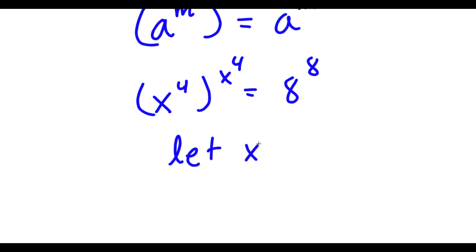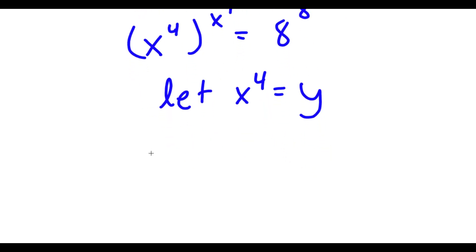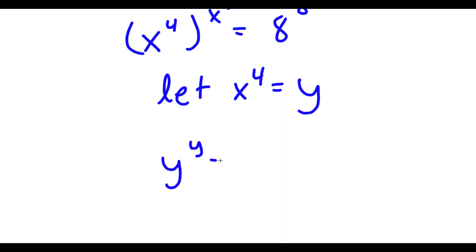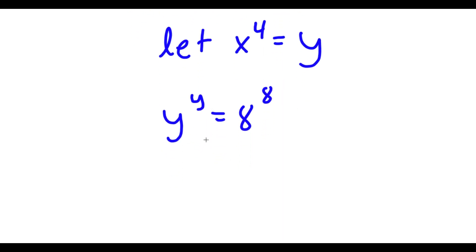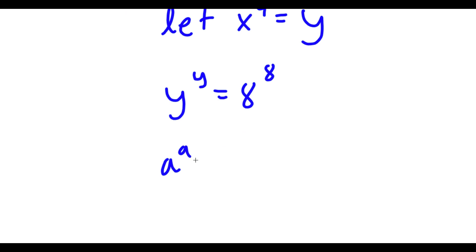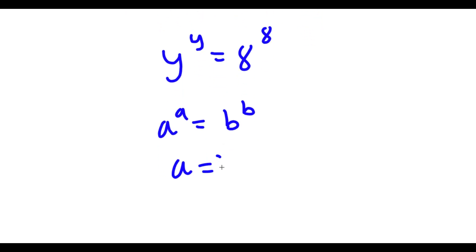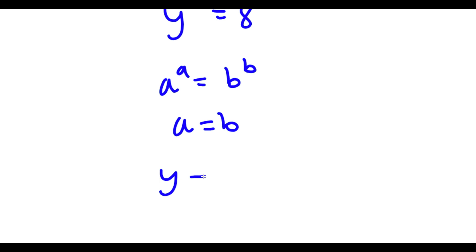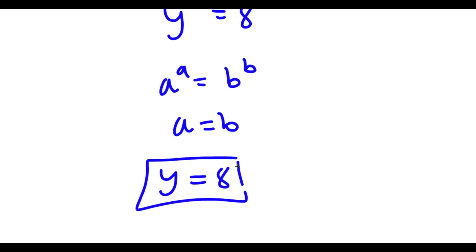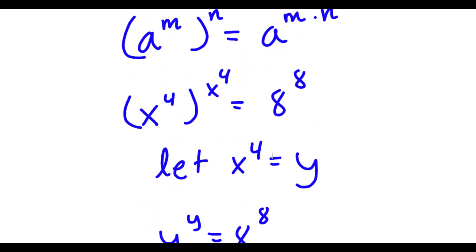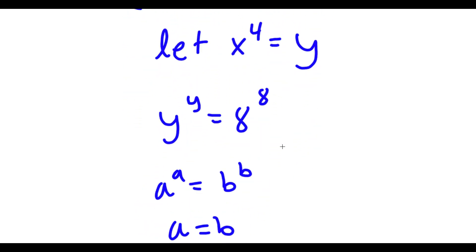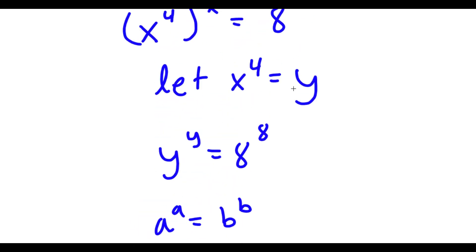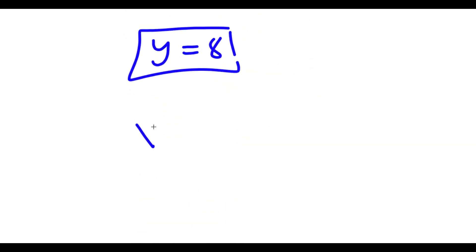Now I'm going to let x to the power of 4 equal the variable y. So now I have y to the power of y is equal to 8 to the power of 8. If a to the power of a equals b to the power of b, then a equals b, meaning y is equal to 8. Since x to the power of 4 equals y and y equals 8, then x to the power of 4 is equal to 8.